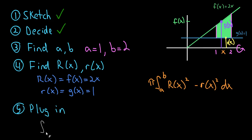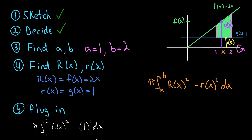Now we have all our pieces, so the last step is to plug into the formula and solve. We have π times the integral from 1 to 2 of (2x)² minus 1² dx. The hard part — setting up the washer method — is over. The remainder is really just evaluating the integral.